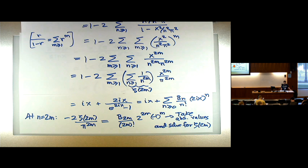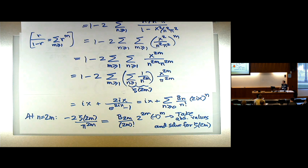So in this way, Euler was able to calculate these values. Now this isn't going to help us with the prime number theorem, but it's giving us the even values. Of course the natural question is: what about the odd values?